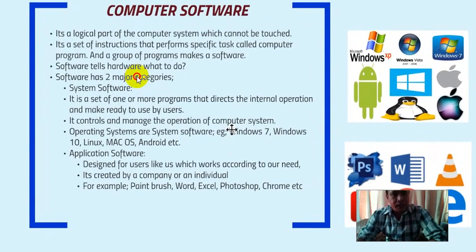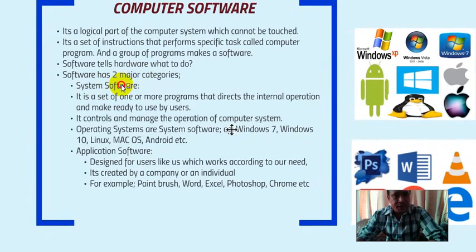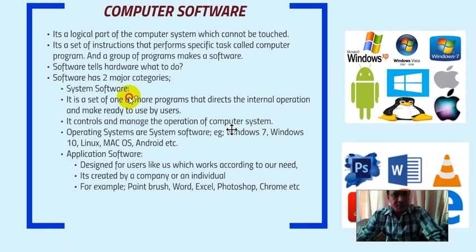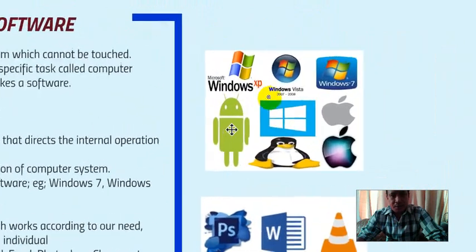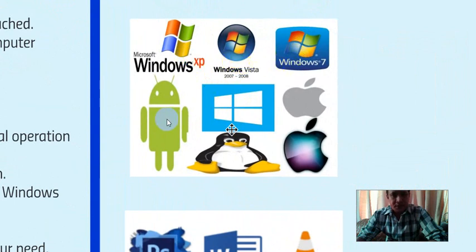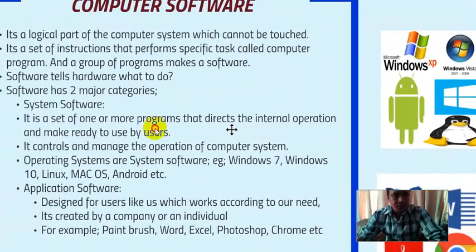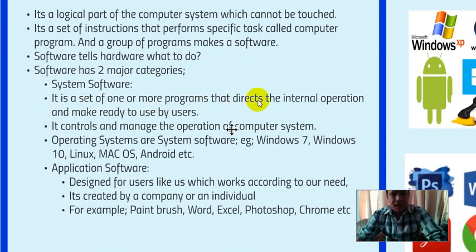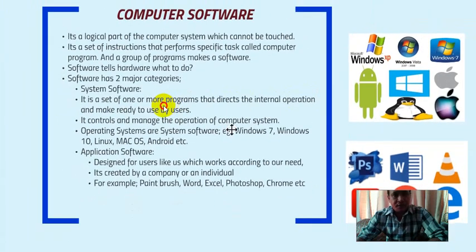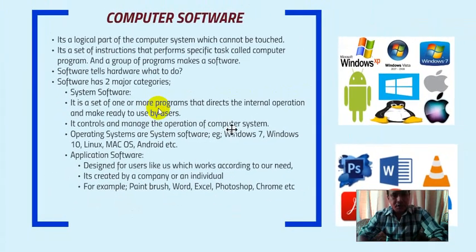Software is mainly divided into two categories: system software and application software. System software includes operating systems like Windows XP, Windows Vista, Windows 7, Windows 10, Android, Linux, and Apple Mac OS. System software is a set of one or more programs that directs the internal operation and makes the computer ready to use by the user.